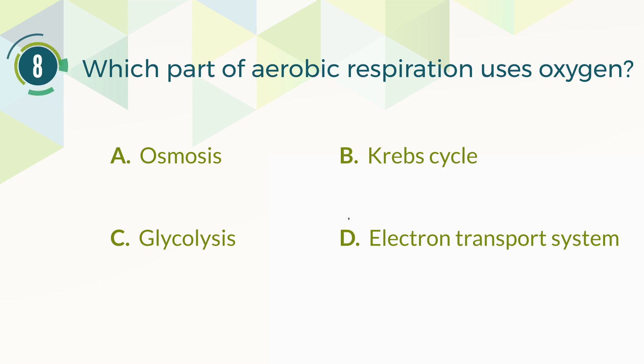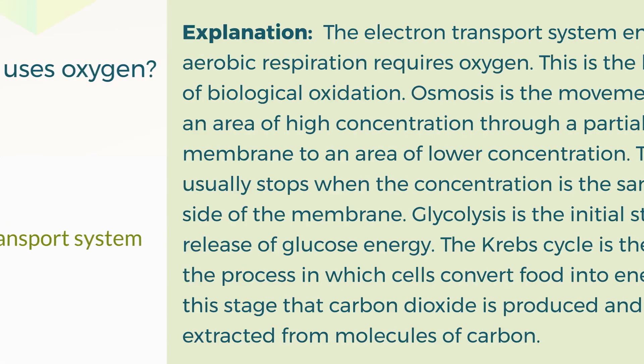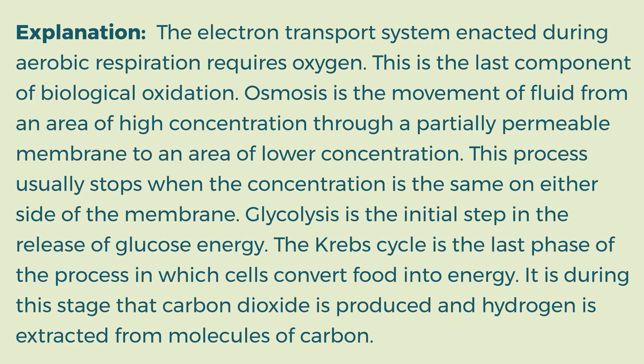The correct answer is D. Electron transport system. Explanation: The electron transport system enacted during aerobic respiration requires oxygen. This is the last component of biological oxidation. Osmosis is the movement of fluid from an area of high concentration through a partially permeable membrane to an area of lower concentration, and usually stops when the concentration is the same on either side of the membrane. Glycolysis is the initial step in the release of glucose energy. The Krebs cycle is the last phase of the process in which cells convert food into energy, during which carbon dioxide is produced and hydrogen is extracted from molecules of carbon.